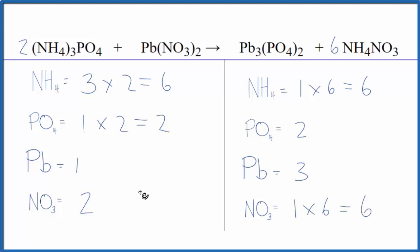I'm almost there because now I could put a three in front of the lead two nitrate. One times three, that'll give me three lead atoms, those are balanced. And then two of these nitrates times three, that'll give me six.